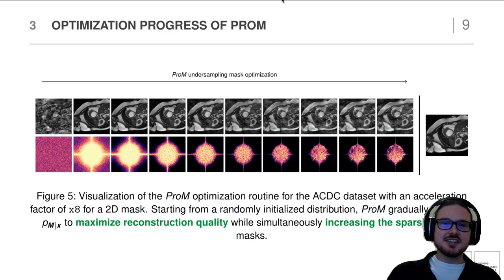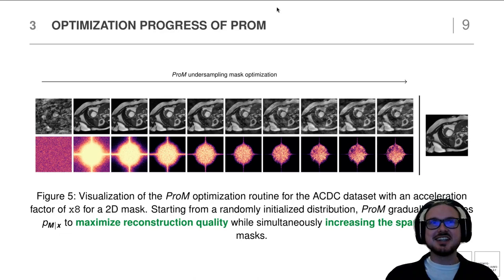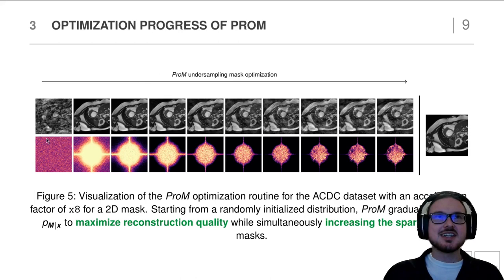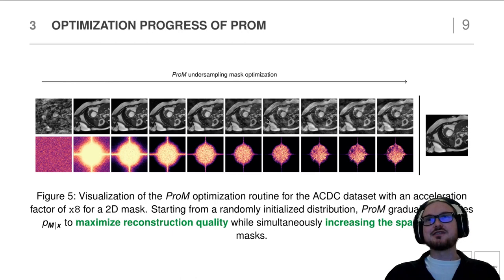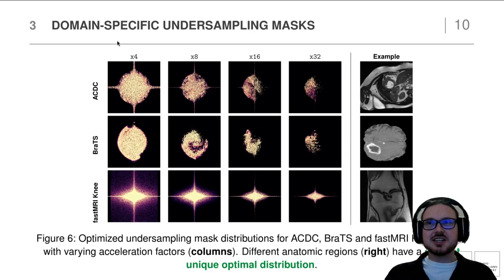In this figure you see the progress of our optimization routine with the example of a heart from the ACDC dataset. We start from a uniformly distributed undersampling mask and then optimization begins. First it is unconstrained, which yields a very good reconstructed image, and then our constraint kicks in and enforces the acceleration factor over time. In the end we arrive at an undersampling mask derived from the actual data sample.